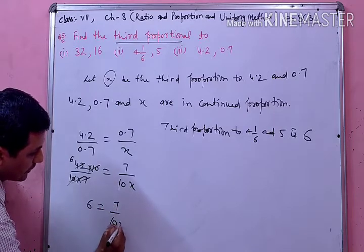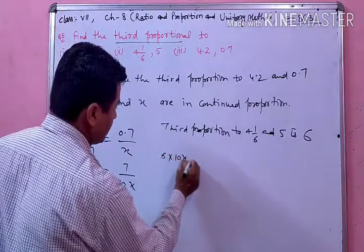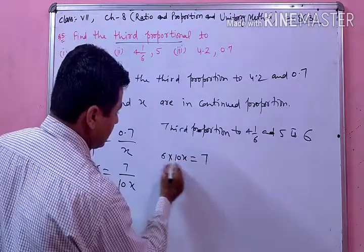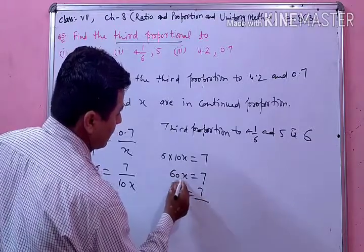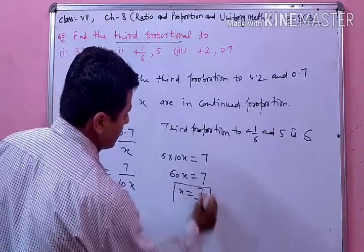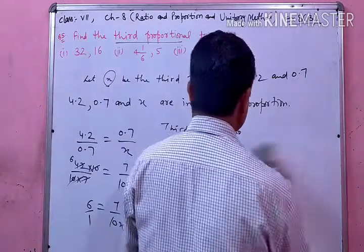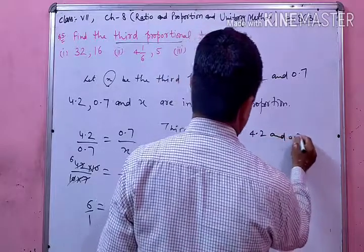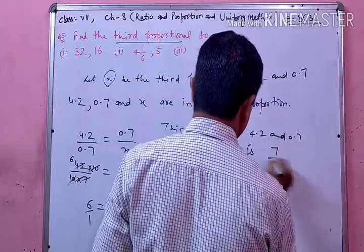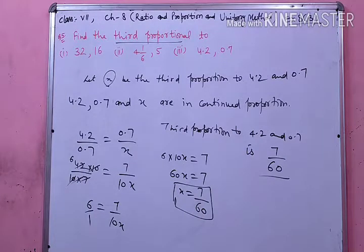7 upon 10 upon x को cross multiply करेंगे तो 6 की multiply 10x से हो जाएगी, और किसके equal है 7 के। तो 60x is equal to 7, तो x की value आई 7 upon 60. इस तरह से third proportion of 4.2 and 0.7 is 7/60. यह important question था question number 5th. अब देखिए question number 6th.